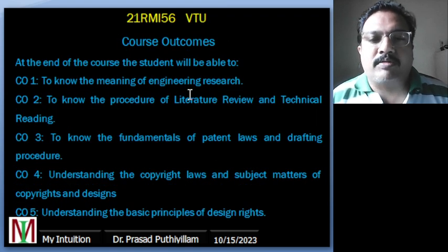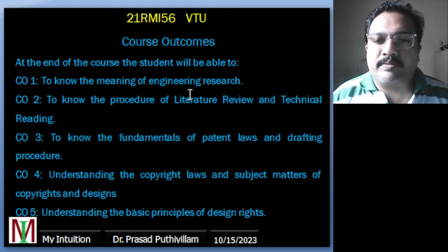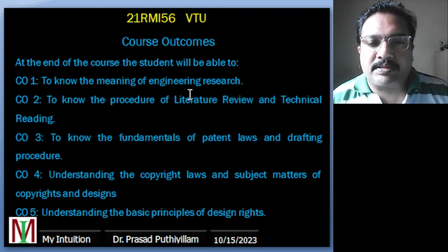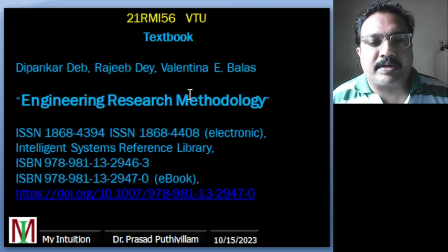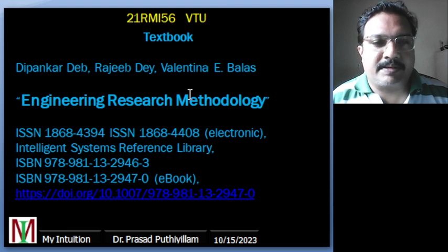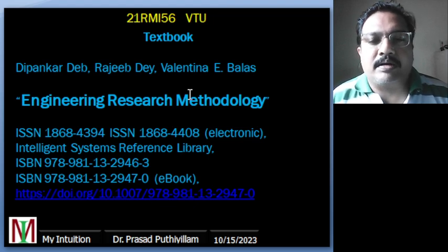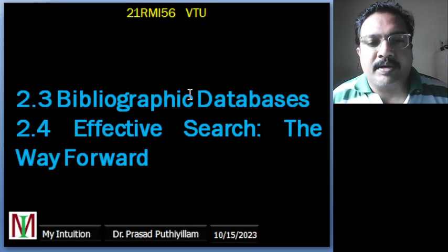This is the course outcome which is there in the syllabus — after completing this subject, what students are supposed to learn and become able to do. CO1, CO2, CO3, CO4, and CO5 are given. This is the prescribed textbook for reference, and it is freely downloadable using Google or other search engines.